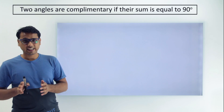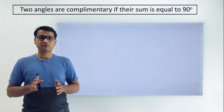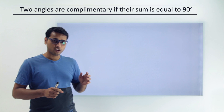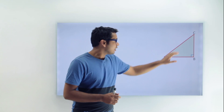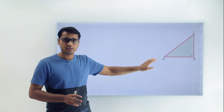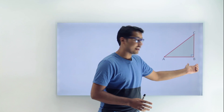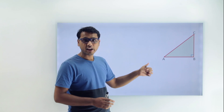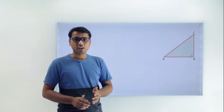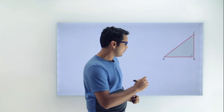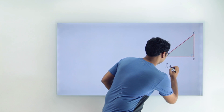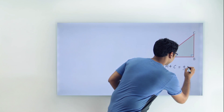Before proceeding further, we should know the meaning of complementary angles. The definition says that two angles are complementary to each other if their sum is 90 degrees. Now consider this right angle triangle. Angle B is 90 degrees, so the sum of the remaining two angles, angle A and angle C, comes out to be 90 degrees. So we can say that angle A and angle C are complementary angles, meaning A plus C equals 90 degrees.